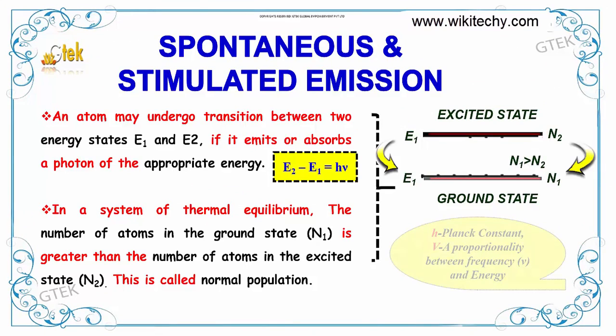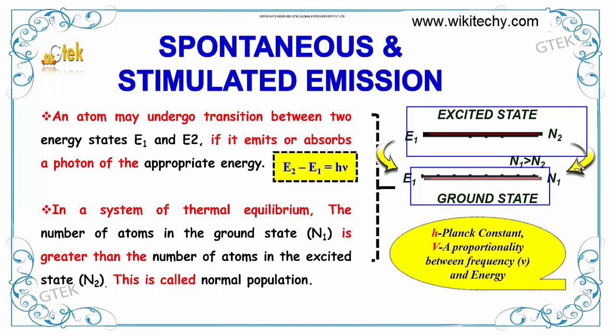We talk about spontaneous and stimulated emission. An atom may undergo transition between two energy states E1 and E2 if it emits or absorbs a photon of the appropriate energy. E2 minus E1 is equal to h nu. In a system of thermal equilibrium, the number of atoms in the ground state is greater than the number of atoms in the excited state N2, and this is called normal population.